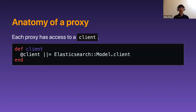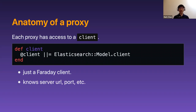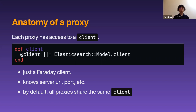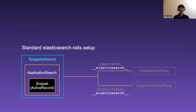Each proxy has access to a client, which is the object used to communicate with the server — basically a Faraday client. It knows information such as the server URL and the port. By default, all proxies share the same client, but this can be changed as well. As a summary, the most simple setup gives us two methods — one on the class level and one on the instance level — which give us the two different proxies to work with.